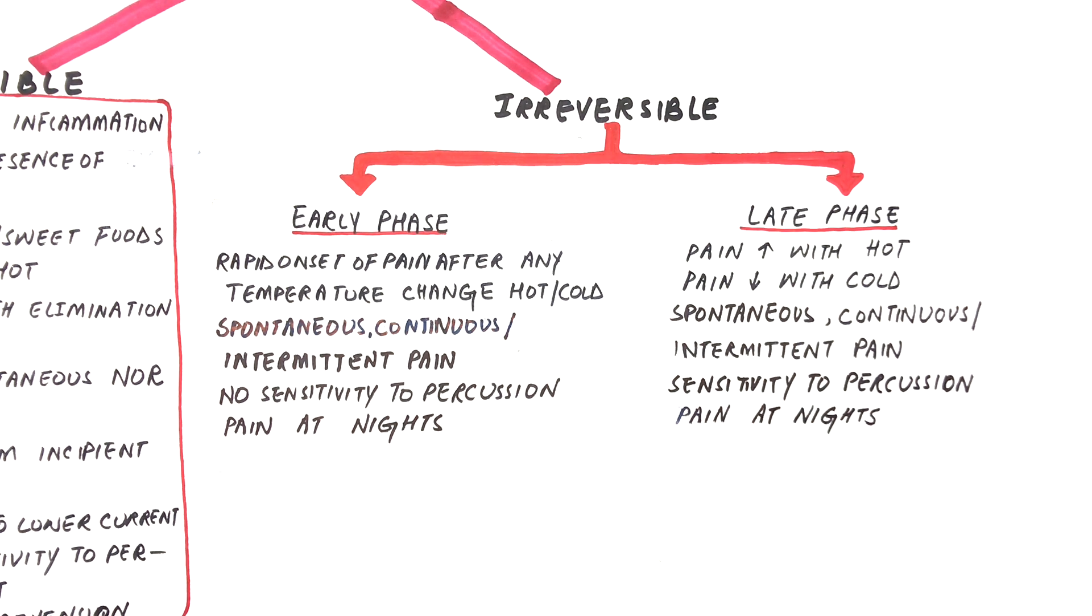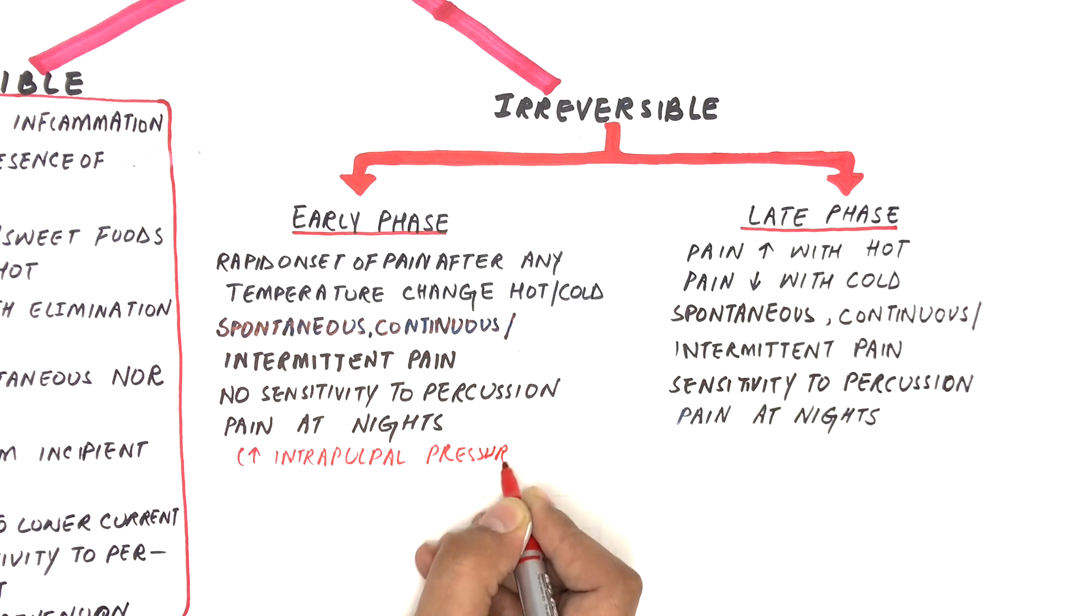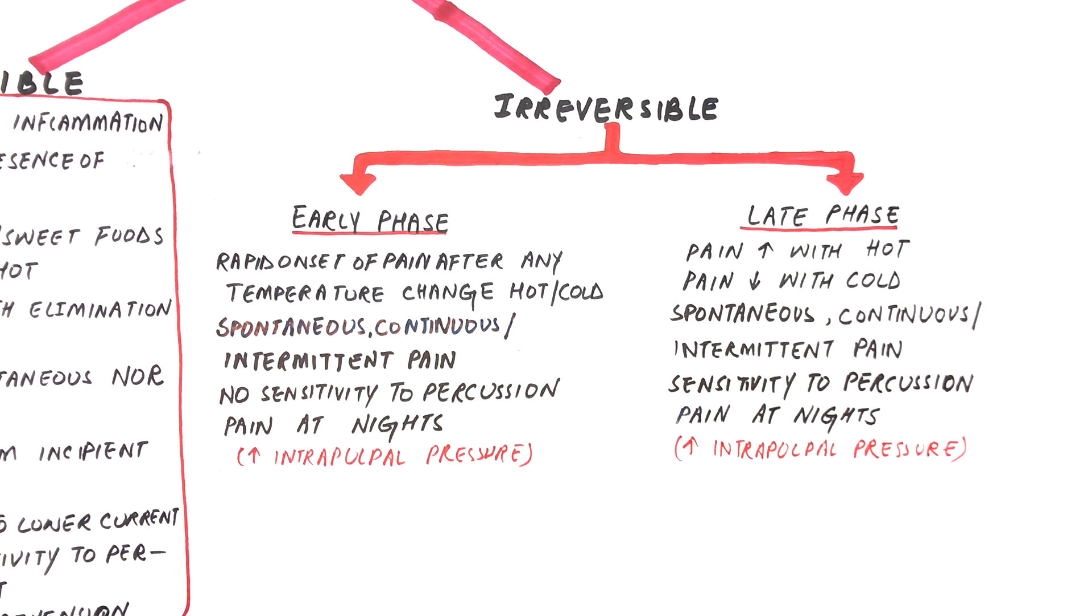The intensity of pain increases when the patient lies down. Therefore, most of the patients presenting with irreversible pulpitis complain of pain during night times and this happens because of the change in the intra-pulpal pressure. As during sleep, when someone lies down, there is a high blood flow towards the head region, leading to severity of pain at nights.